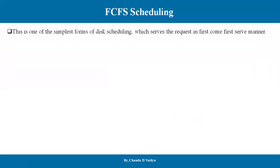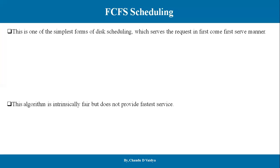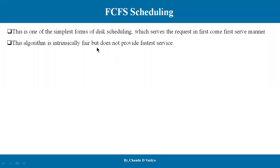First-Come-First-Serve is one of the simplest forms of disk scheduling, which serves the request in a first-come-first-serve manner. This algorithm is intrinsically fair but does not provide fast access — meaning it is fair in order but doesn't provide fast service.